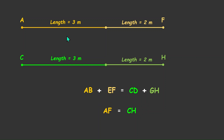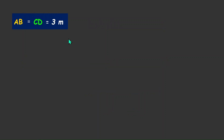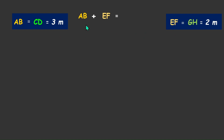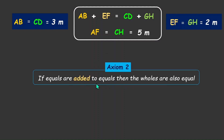Both AF and CH equal 5 meters, so AF equals CH equals 5 meters. What we really did here: we had one pair of equals — AB equals CD equals 3 meters — and another pair — EF equals GH equals 2 meters — and we added both pairs. The wholes were also equal: AB plus EF equals CD plus GH. This is the idea of Axiom 2, which says that if equals are added to equals, then the wholes are also equal.